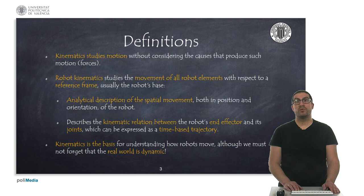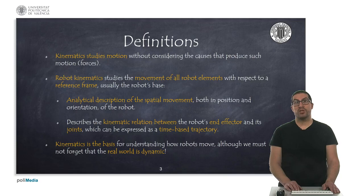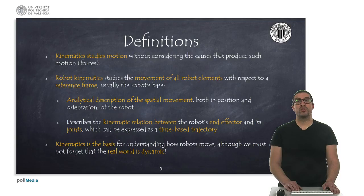It allows, therefore, to establish a relationship between the end effector and the joints of the robot as a function over the time, both in position and speed. Kinematics is the basis for understanding how robots move. In a large number of applications where robots do not move at high speeds, kinematics play a fundamental role.